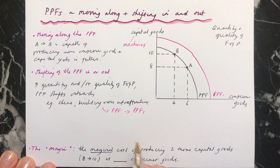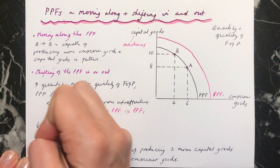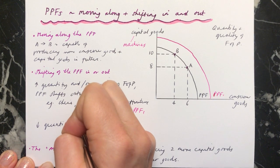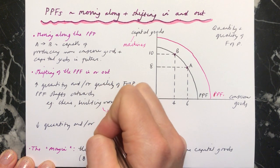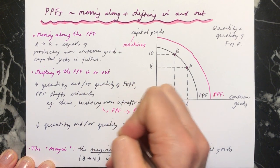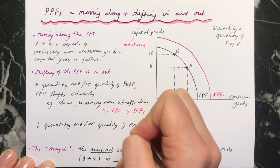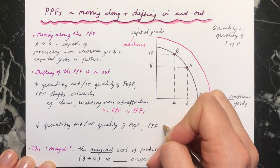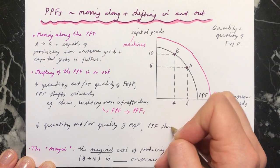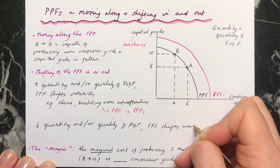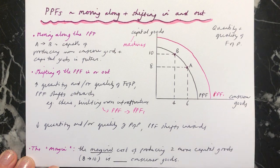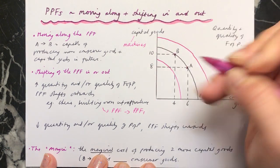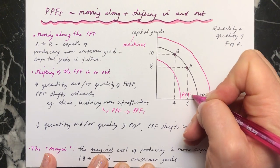On the other hand, if you have a decrease in the quantity and/or the quality of the factors of production, the PPF will shift inwards. And this would be, for example, a shift to PPF2.